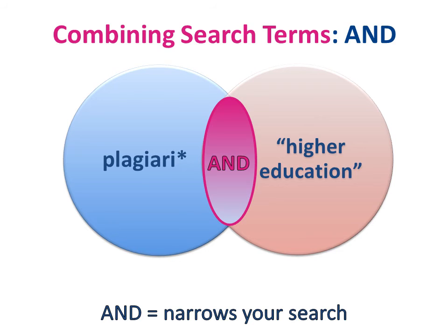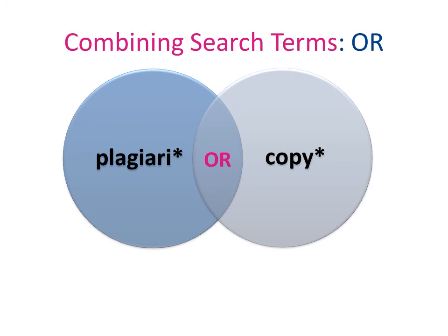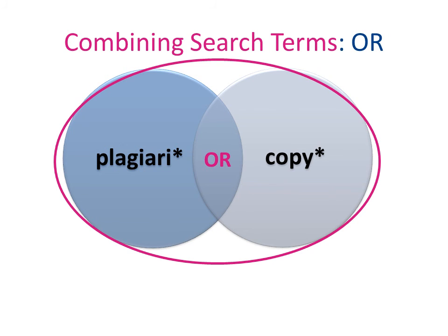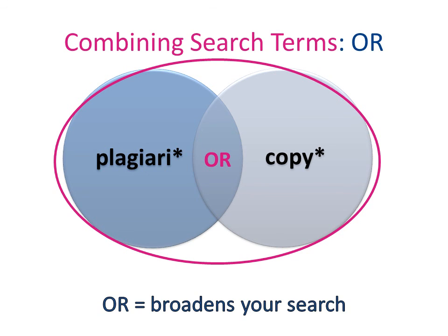Many resources such as Library Search and Google automatically carry out this function, but not all. We can also use the word OR to broaden out a search to find items where any of the keywords appear. In this example, every article featuring either of our search terms would be located.